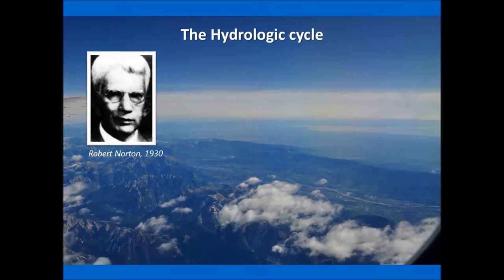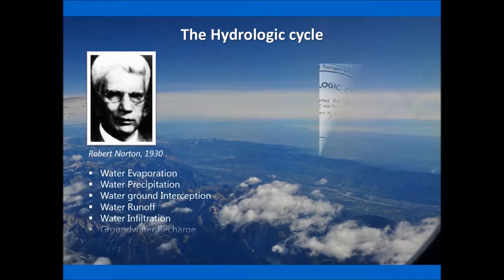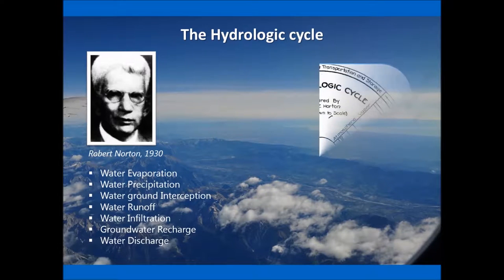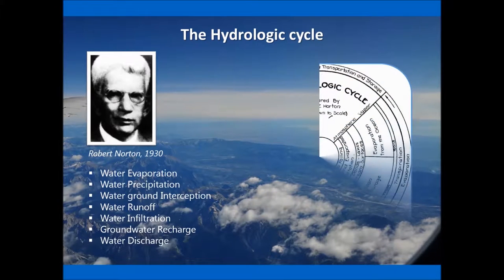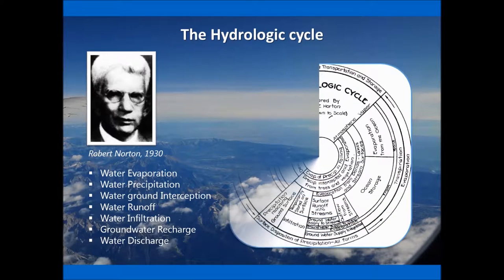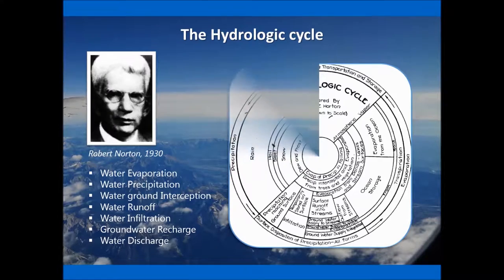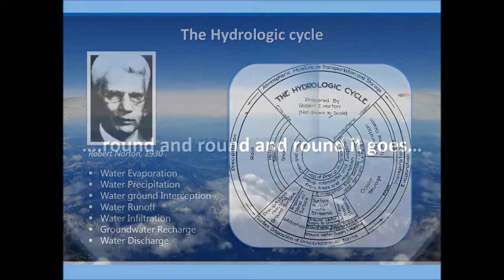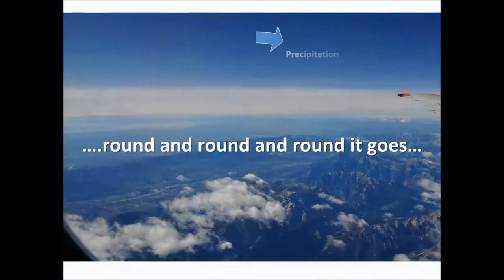In the 1930s, Robert Horton created a diagrammatic representation of the hydrological cycle. This was to show scientists and people alike that hydrology was not only about underground water flows, but illustrated the main processes involved.